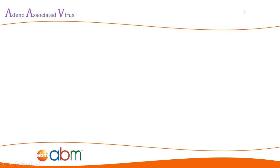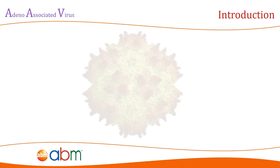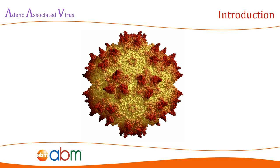Since its discovery, adeno-associated virus has helped move science and research forward due to its excellence as a gene delivery system. This small virus has revolutionized the usage of viral vectors for gene therapy and transgenic expression, with its many features that make it a suitable candidate for these tasks. Although its usage as a viral vector is still relatively new compared to other tried methods, AAV features many significant advantages that other vectors lack.